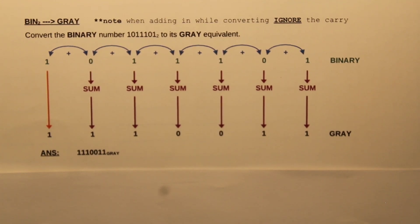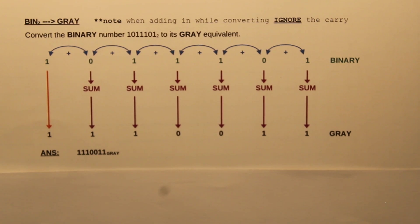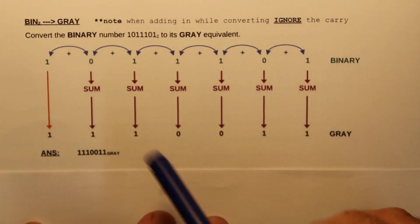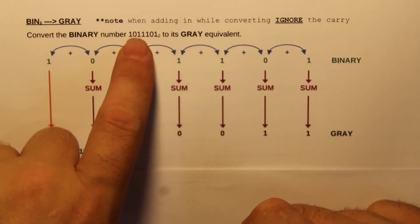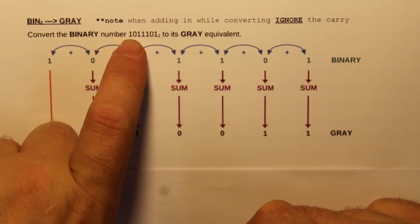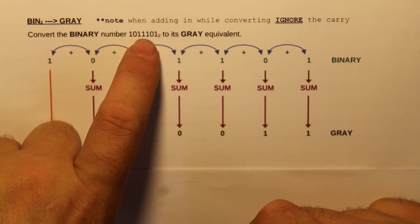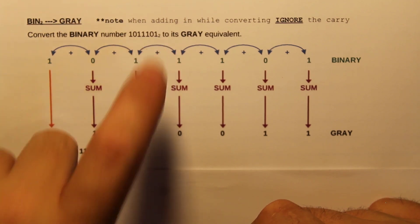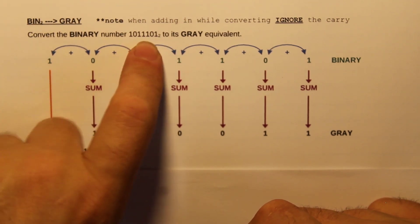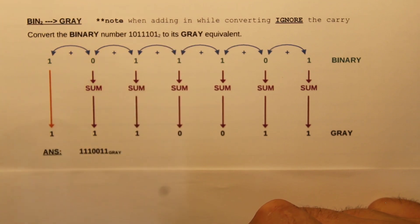We're going to be looking at the last code, which is called the Gray Code. How this works is very different to the other codes we were looking at, but also very simple. We're going to be converting the number 1011101, which is in binary, and then converting that into Gray Code.